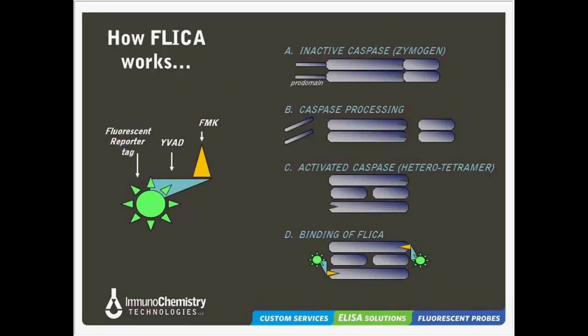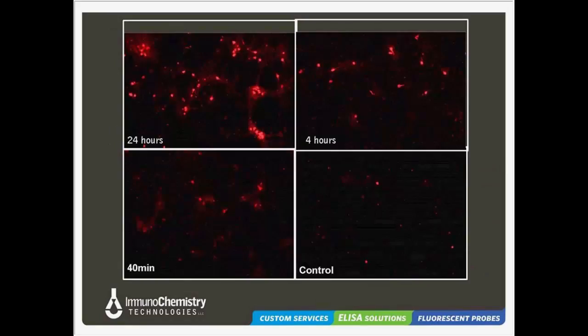Now let's delve into how FLICA works. The FMK group on the FLICA probe forms a covalent bond with the reactive catalytic sites on the active caspase enzyme. This enables the FLICA probes to be retained inside the cell despite the subsequent wash steps. FLICA is not cleaved by the caspase. Once the FMK reactive groups on the FLICA probes form covalent bonds with the two catalytic cysteine groups within each of the two caspase reactive sites, that particular caspase enzyme is rendered essentially inactive and can no longer cleave any substrates.